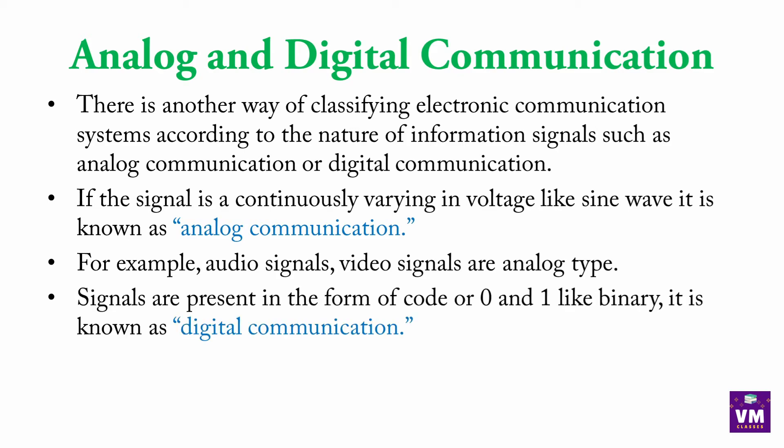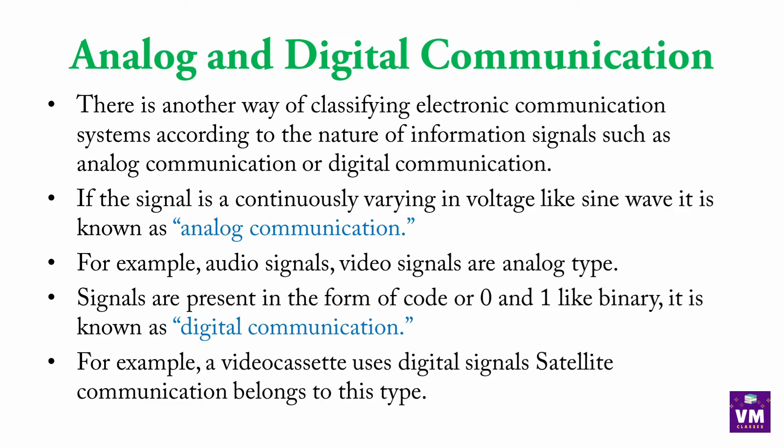Signals present in the form of code — 0, 1, binary — it is known as digital communication. Ab agar signals mil rahe hai aur woh 0, 1 ke form mein hai, coded form mein hai, to woh hota hai digital communication. For example, a video cassette uses digital signals. Satellite communication belongs to this type. Jo hamara satellite communication hai, woh is digital communication ke type mein aata hai.